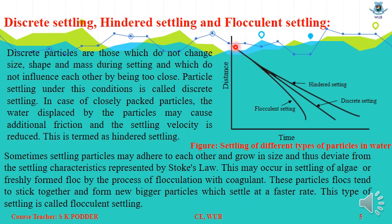Here we provide a graph showing the settling of different types of particles in water — that is, how much distance they travel with respect to time. The middle line indicates discrete settling, another line indicates hindered settling, and another line indicates flocculent settling.